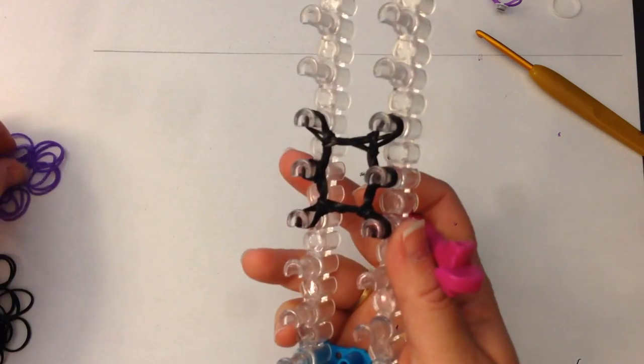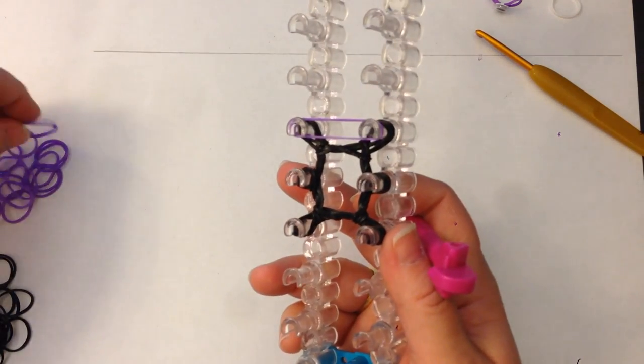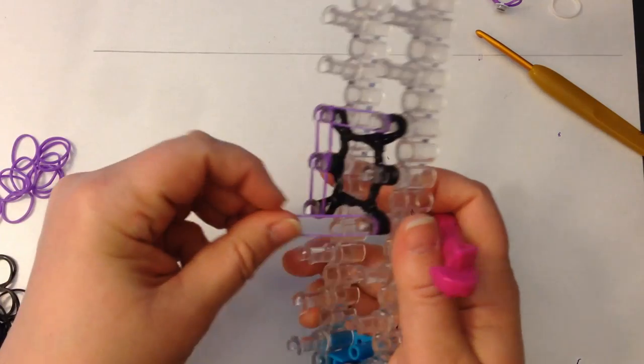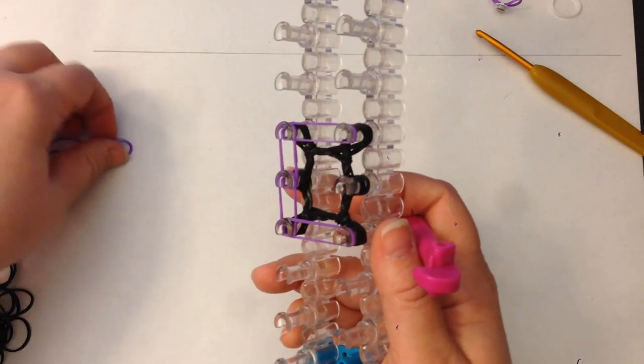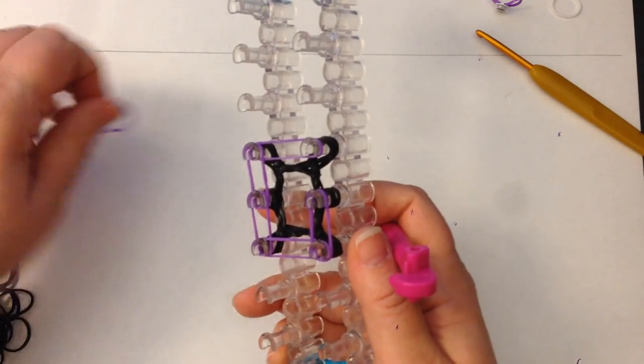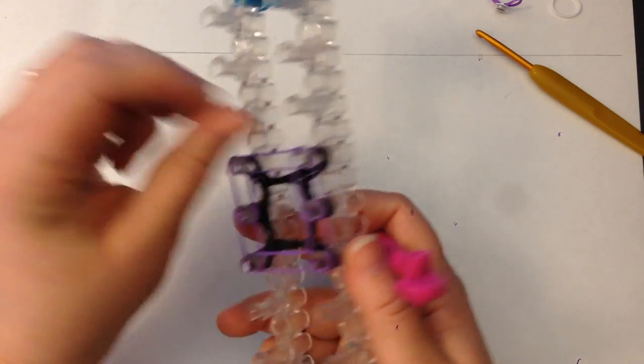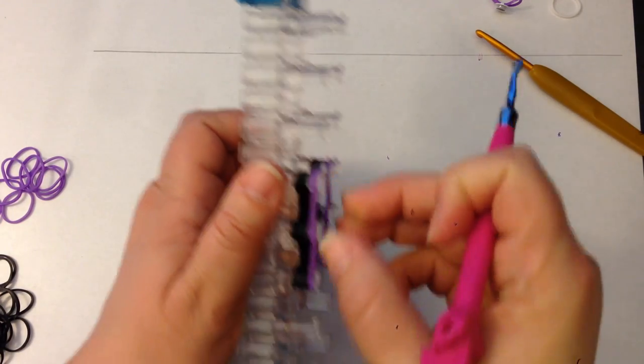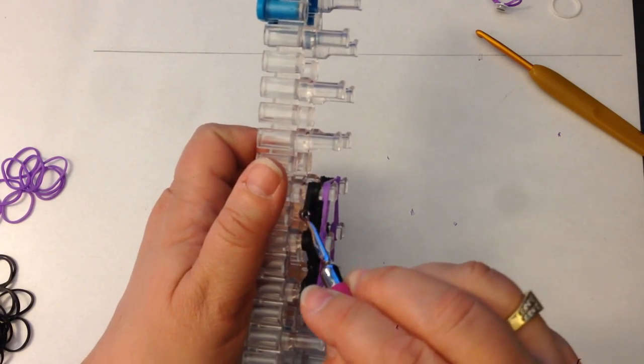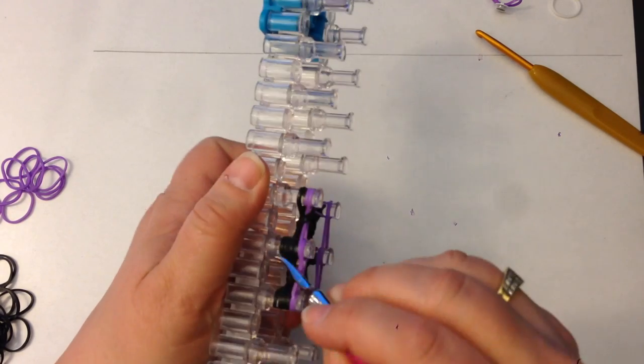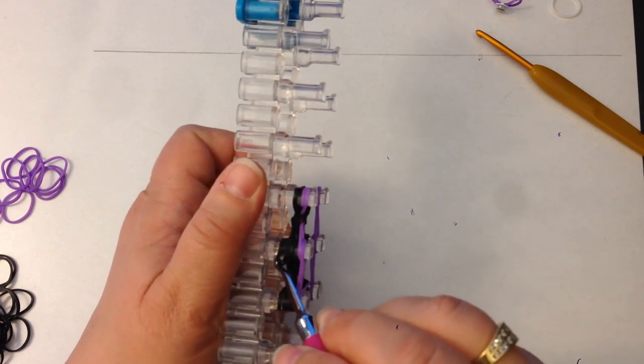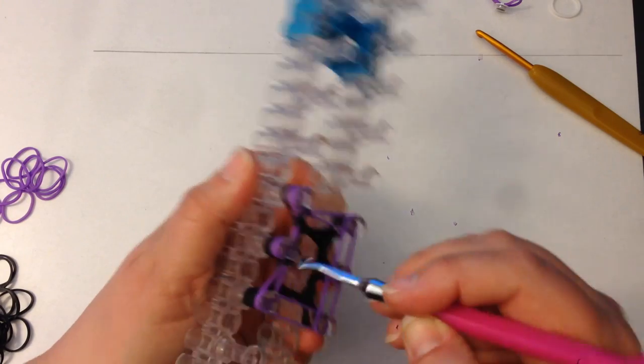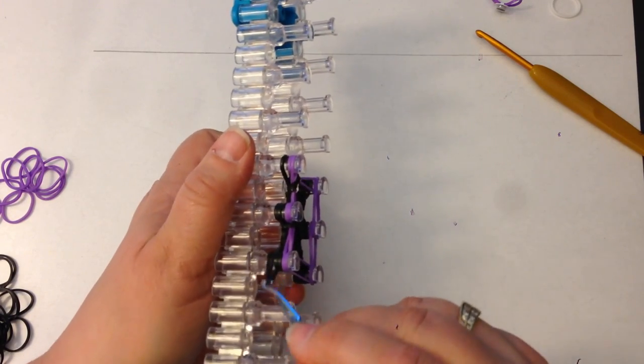Our fourth row is purple. And push everything down to make room. You're going to loop your bottom two black bands. And as I said, this is row number four.